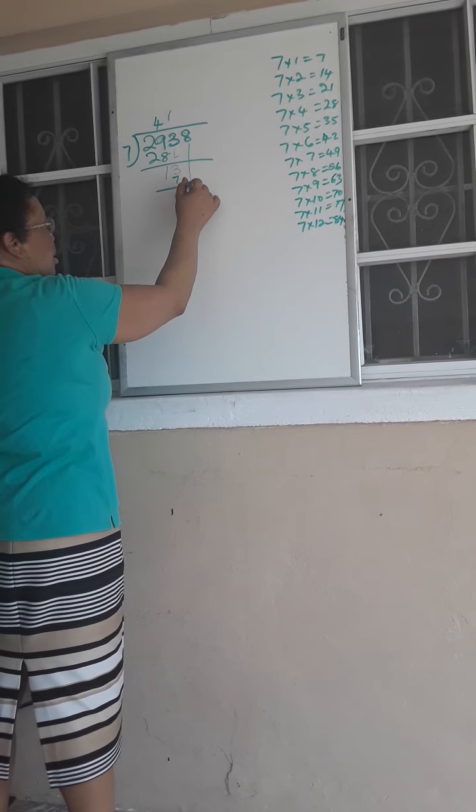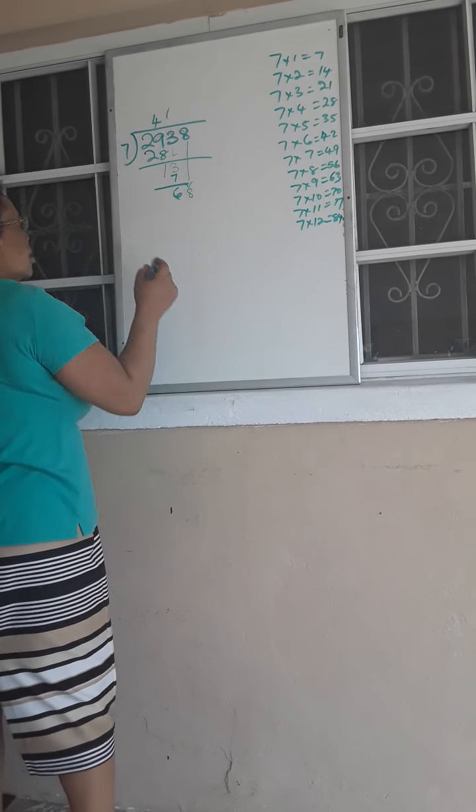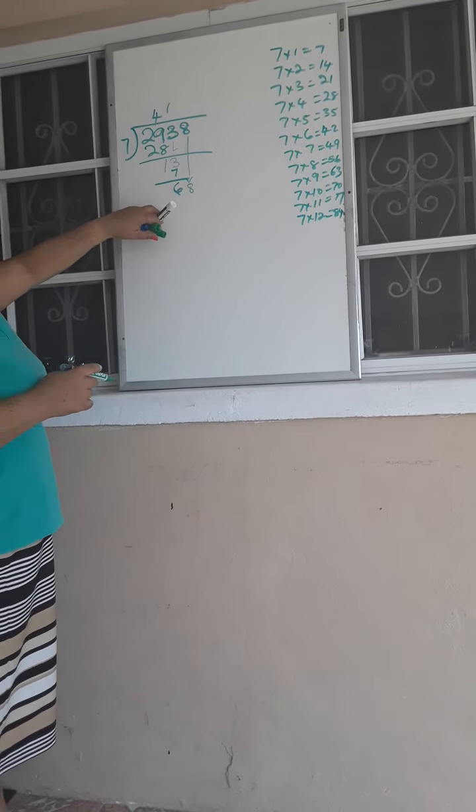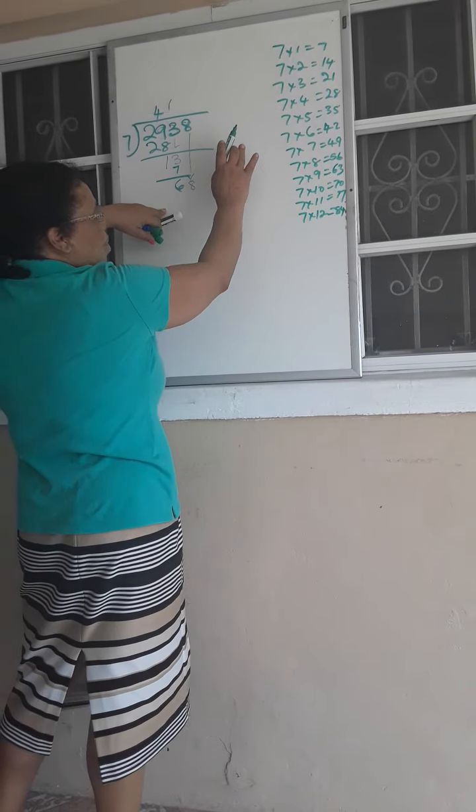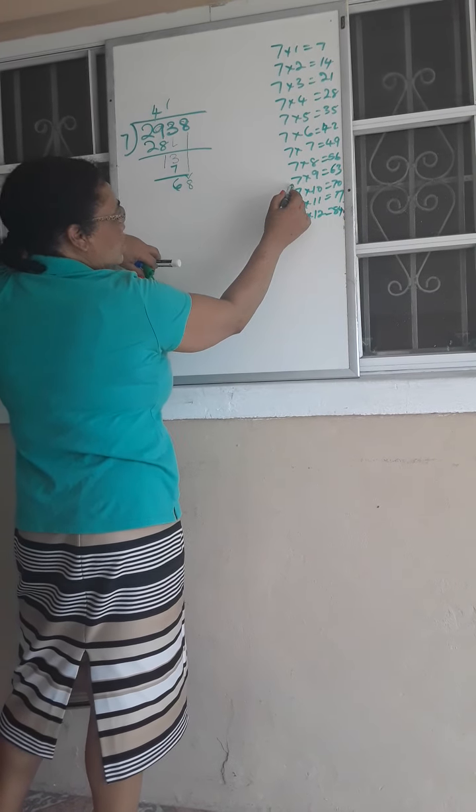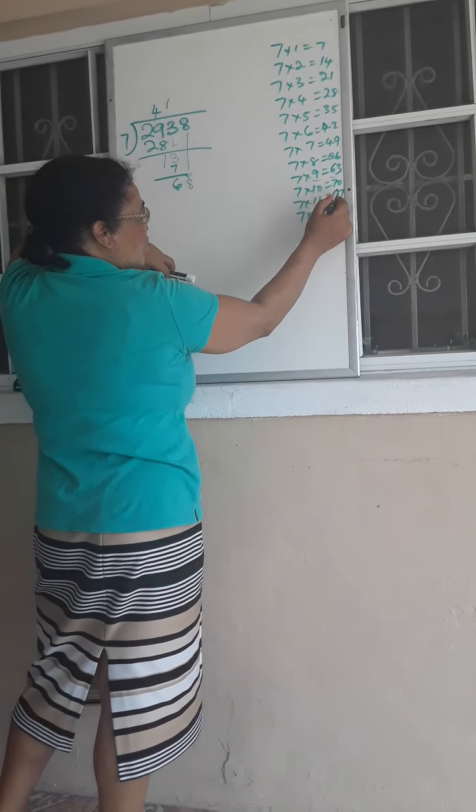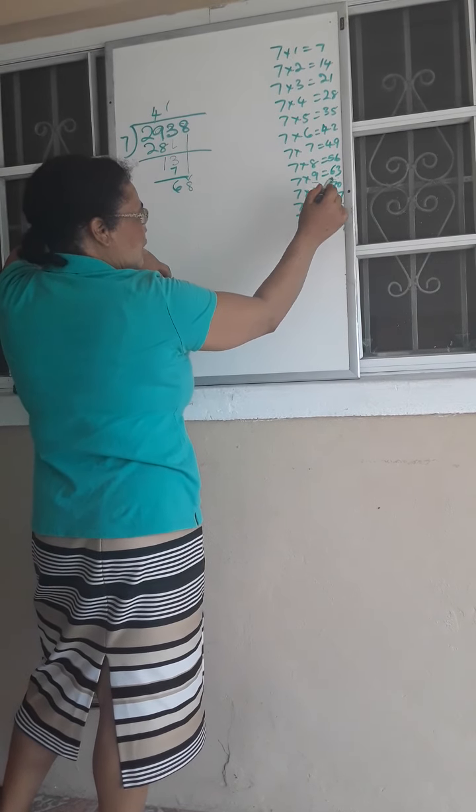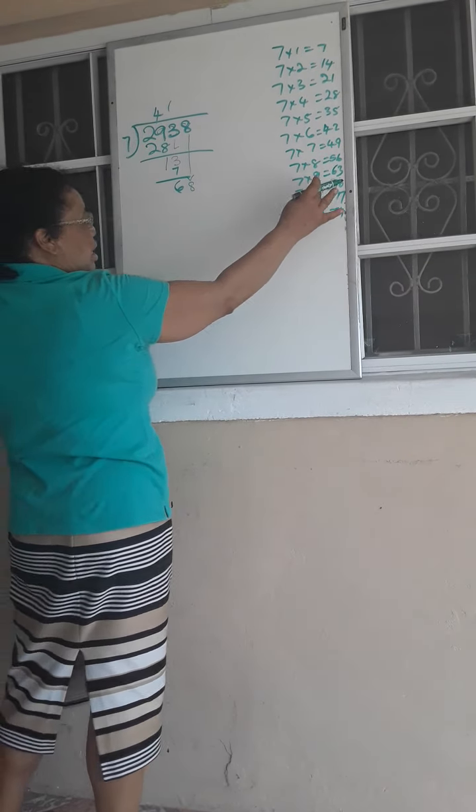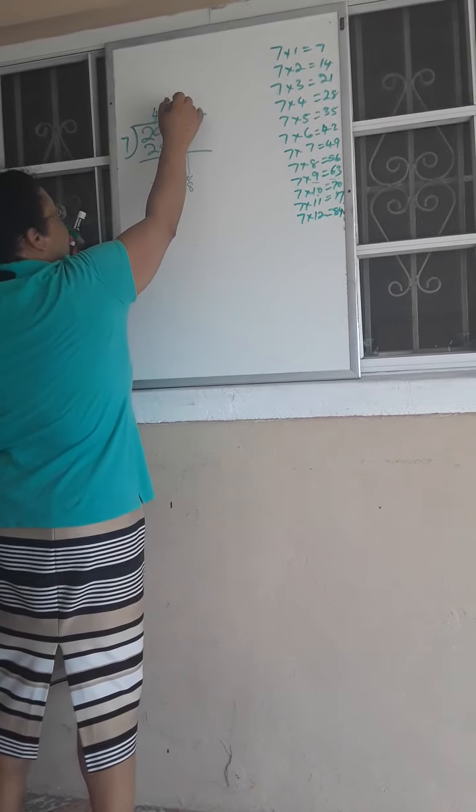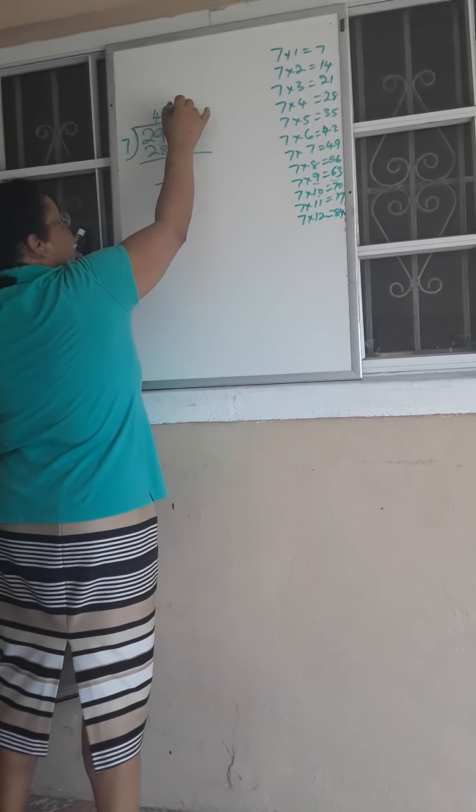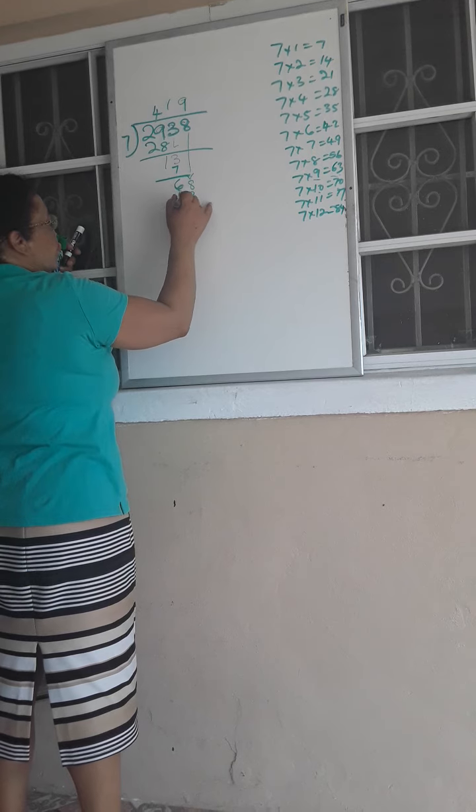I'm going to now bring down this 8. I go 7 into 68. I then go back to my table, and I notice I can go right here, 63. I can't go to 10 because it will be 70. So 7 into 68, I could get 9 times. 7 times 9 is 63.